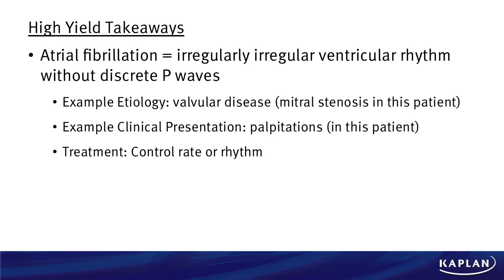Example clinical presentation: patient comes into your ED with palpitations, you listen, you hear mitral stenosis — you better be thinking this guy could have AFib. For treatment, we've got to control the rate with one of those medications. In this case, a calcium channel blocker because of the pulmonary disease. But for another question down the line, medications may not work and we're going to have to shock this guy to control the rhythm. Big stuff to keep in mind: AFib. Know these different concepts — it's going to lead you to higher points on test day.